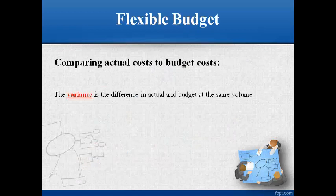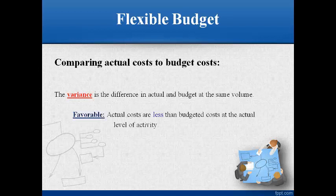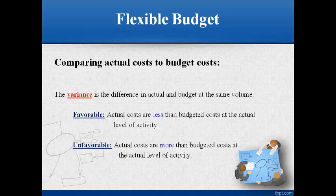A flexible budget can be compared to actual results for a given quantity to determine the reason for the difference in estimated and actual income. The difference in the estimated amount and the actual amount is called a variance. Lower than expected actual cost and higher than expected sales gives a favorable variance. Actual costs higher than expected and sales lower than expected gives an unfavorable variance — unfavorable is worse than expected.